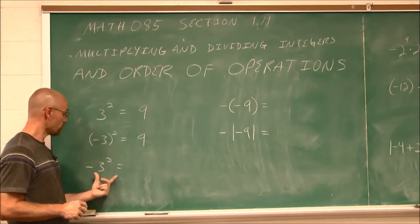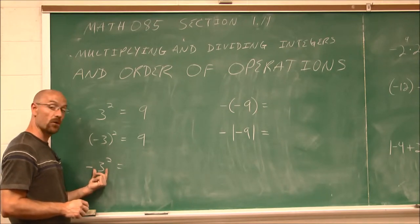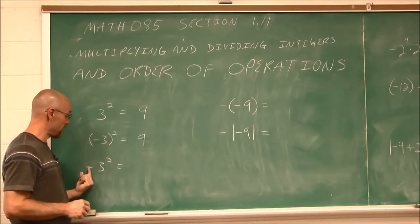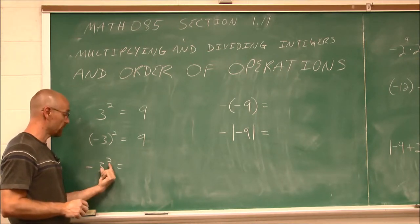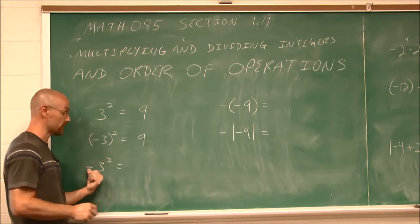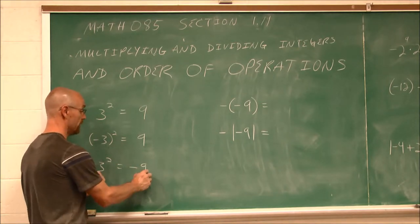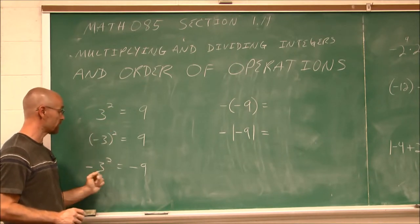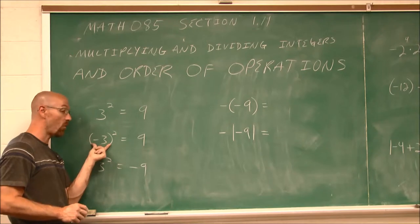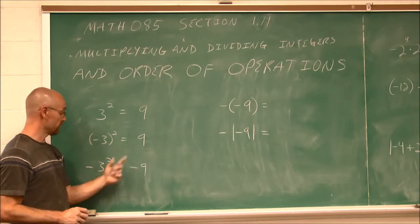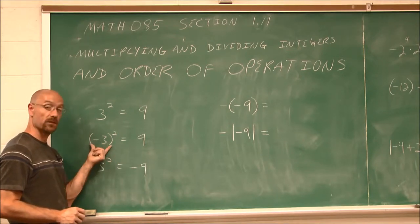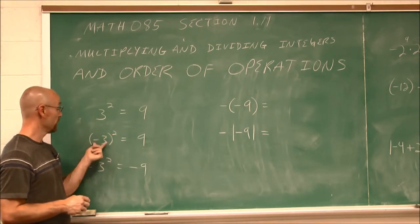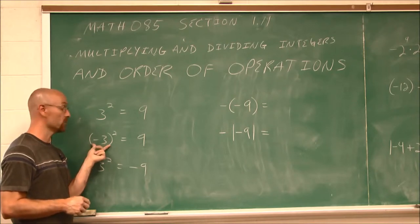But what if we have this here? If we look at this, there are no parentheses. So this exponent only applies to this 3. So this says negative 3 squared. 3 squared is 9, but then we're going to take its opposite. Negative 9. So you can see how we got a different result from 3 squared and negative 3 squared. And this negative 3 quantity squared is different than negative 3 squared. So watch for these parentheses and know that this power only applies to what it's adjacent to.